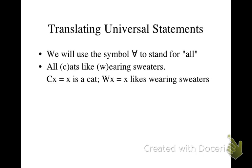In order to translate that into a universal symbolized statement, we first start out with a universal quantifier and an X. Then we make the first predicate — the predicate that is the subject of the sentence. In this case the subject is 'cats,' so we make that the antecedent of a conditional: CX arrow.